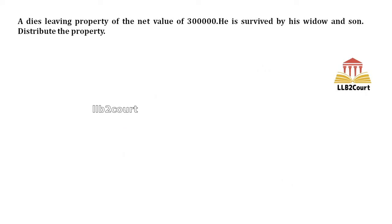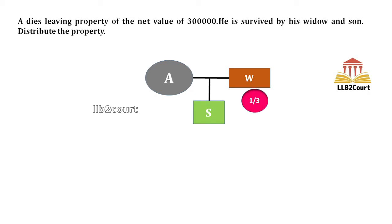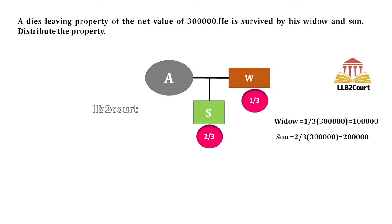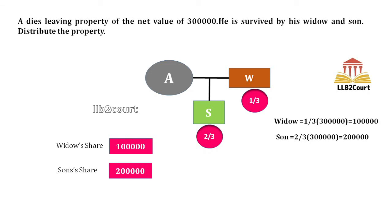Problem 2: A dies leaving a property of net value three lakhs, survived by his widow and son. A is survived by widow W and son S. Since lineal descendants — the son — are present, the widow's share is 1/3. The remaining 2/3 goes to the son. So widow's share is 1/3 of three lakhs = one lakh. Remaining two lakhs — that is 2/3 of three lakhs — goes to the son. Widow gets one lakh, son gets two lakhs.